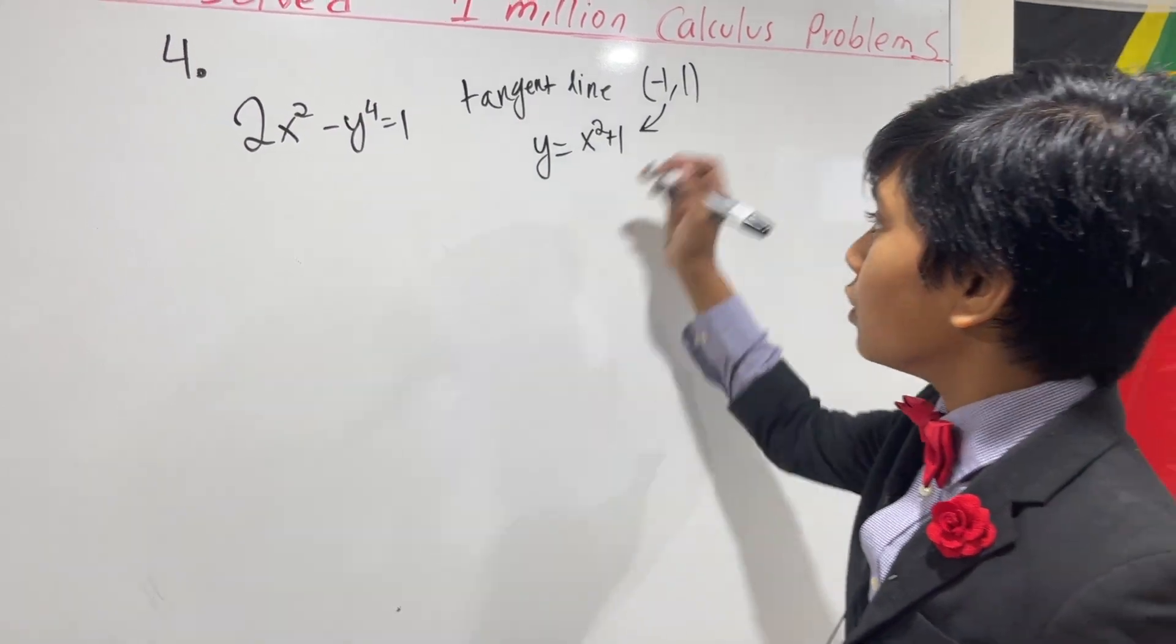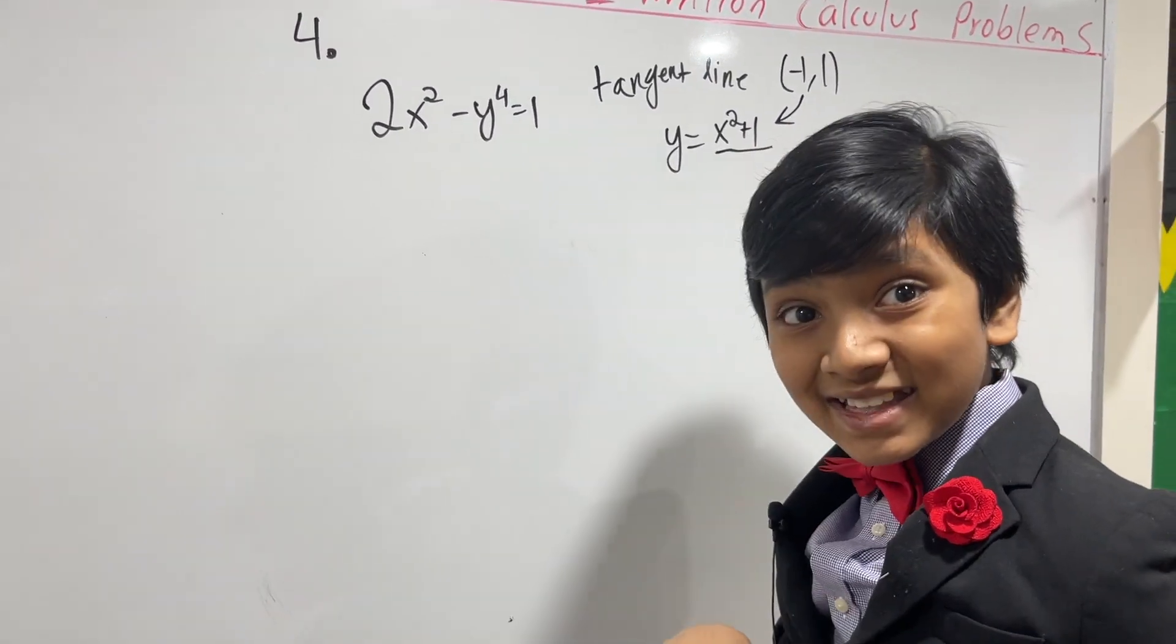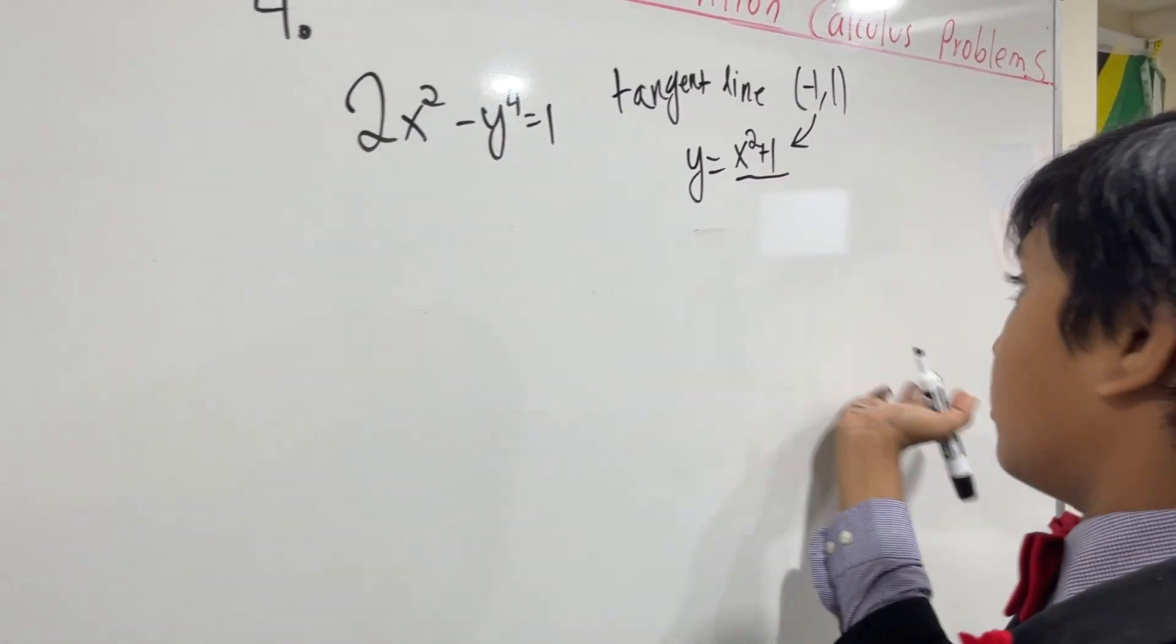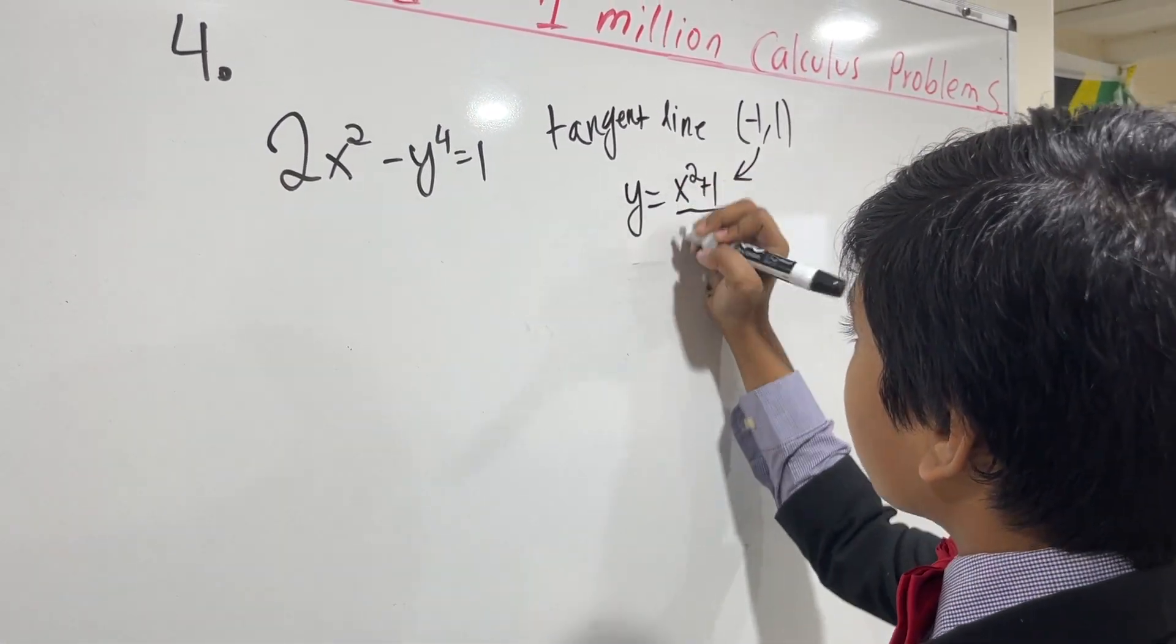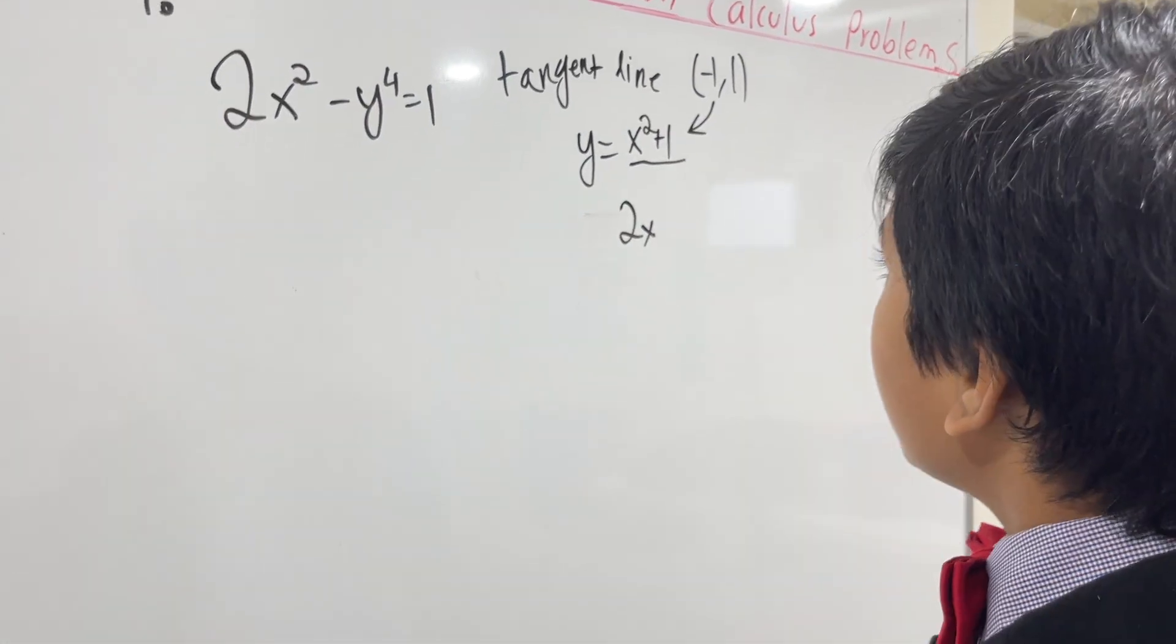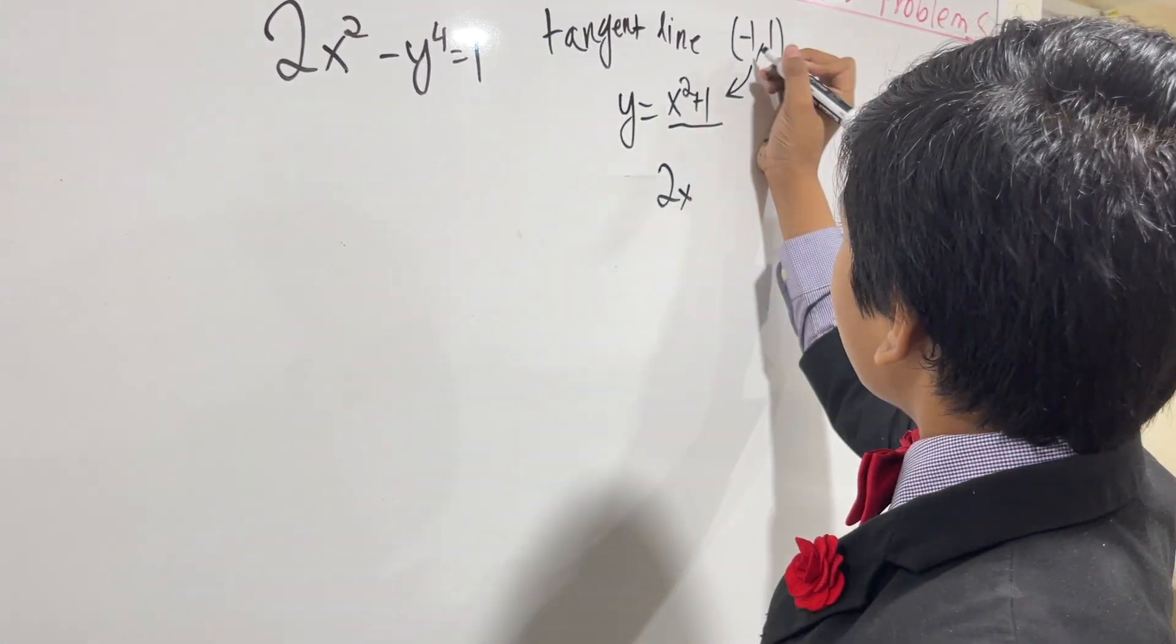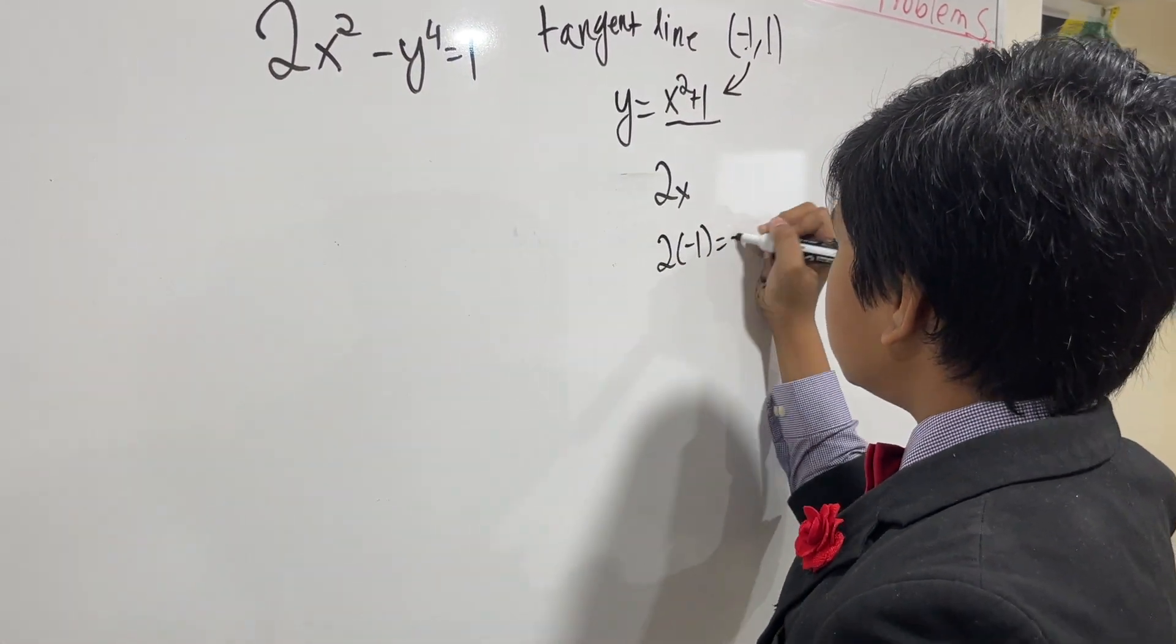Well, that's very simple. What we have to do, we have to take the derivative, that is the most important part. This would become, using the power rule, just 2x and the derivative of 1 is 0. Then what we do is we plug x into here. So, plugging x in here, we get 2 times minus 1 is minus 2.